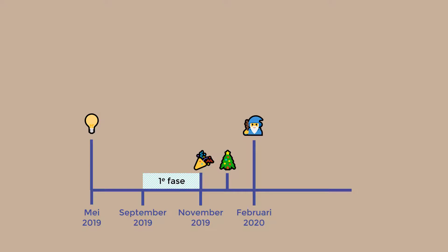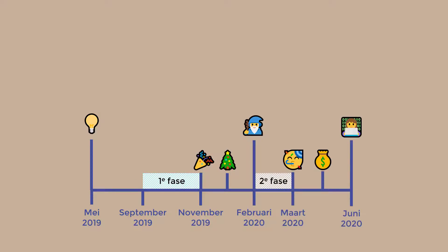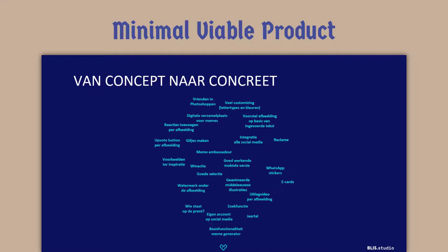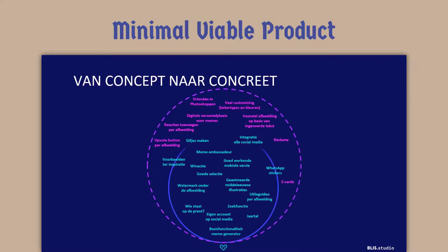After this session, we had to apply for the second part of the funding based on the first results of the design thinking session. We made a minimum viable product — a version of the meme generator with just enough features to be usable by early customers who can then provide feedback for future product development.